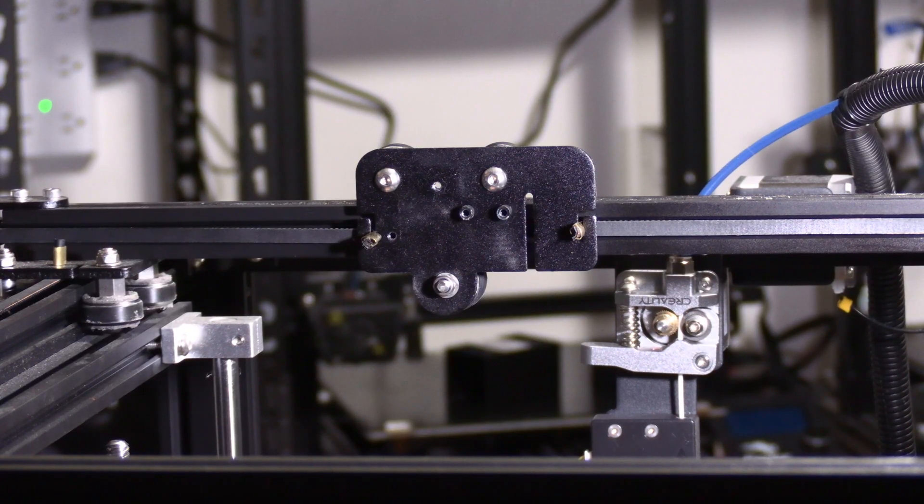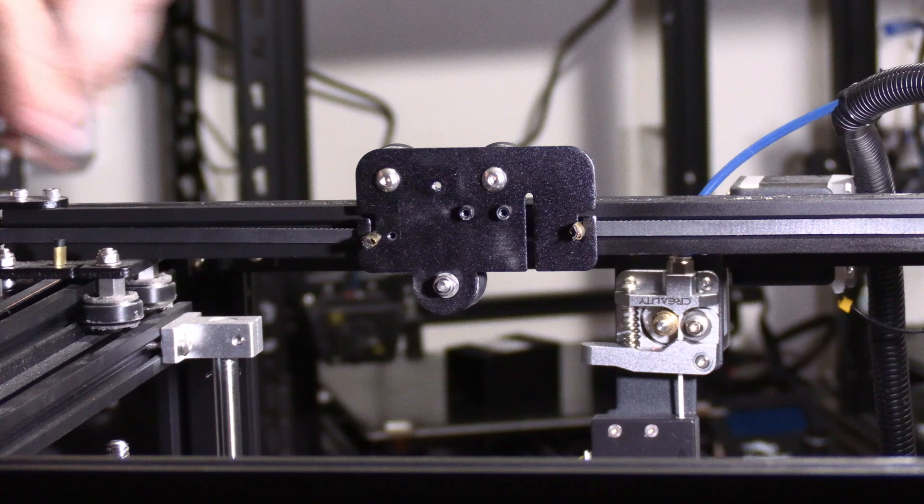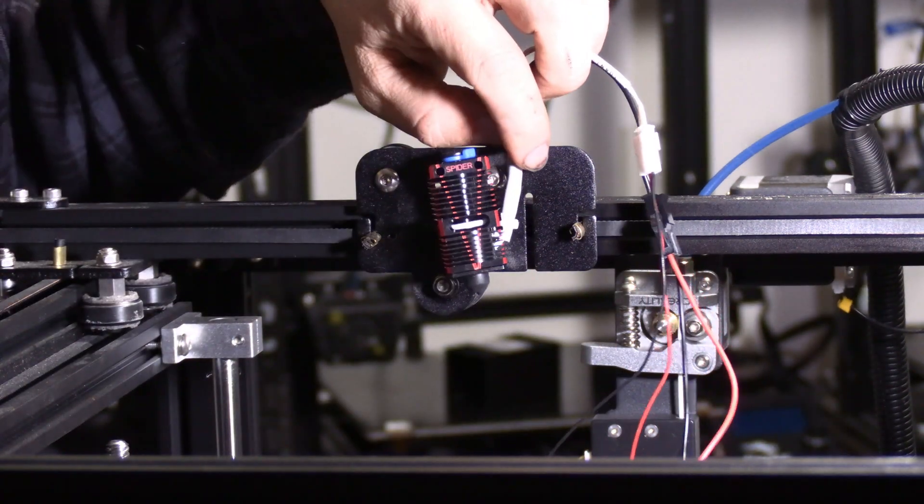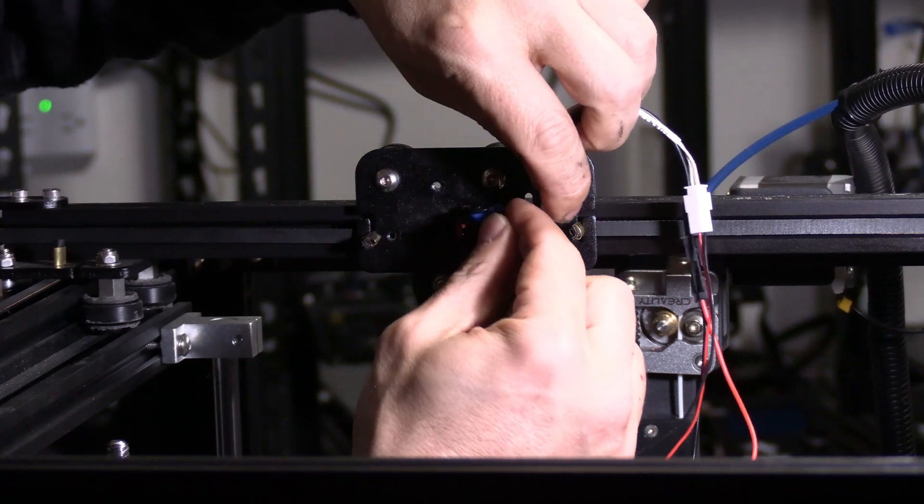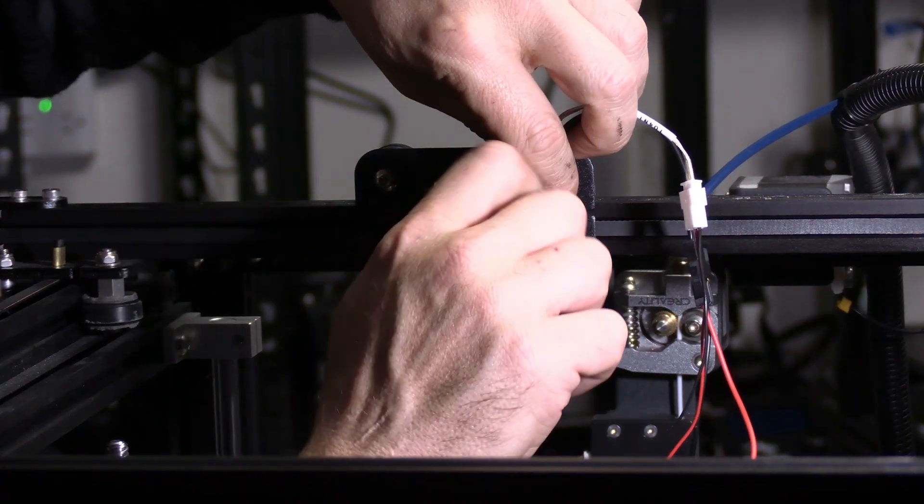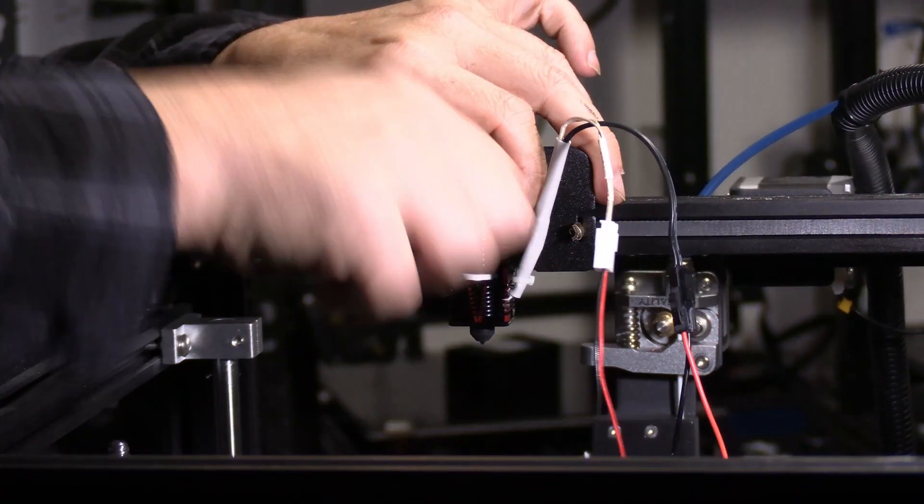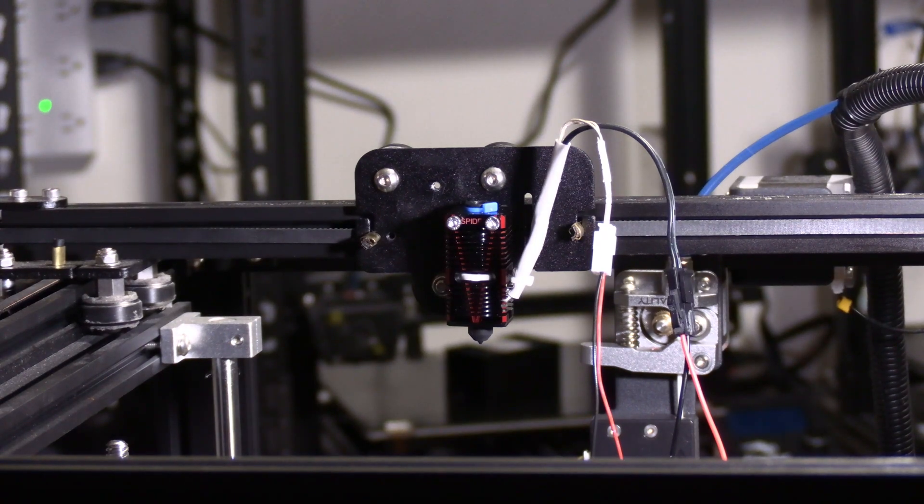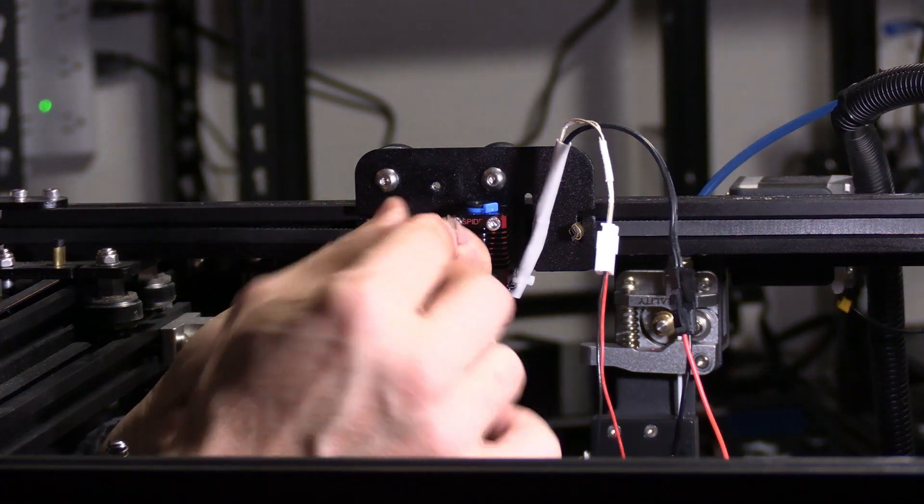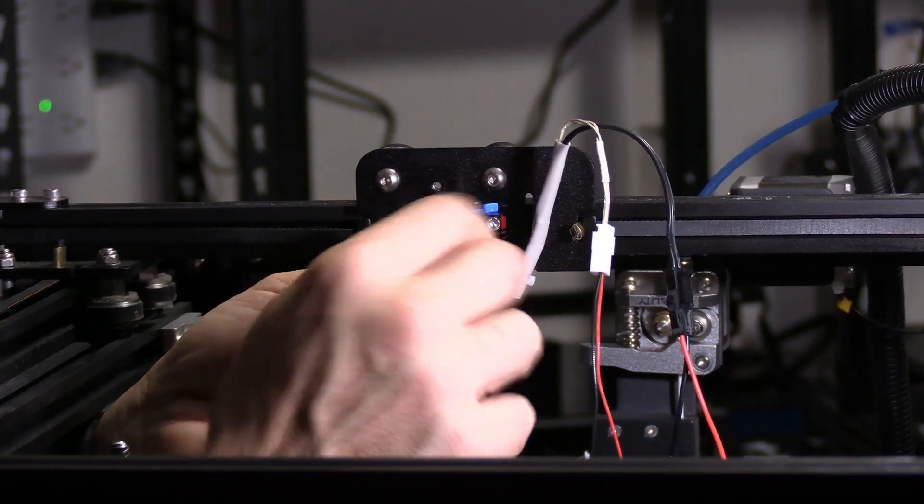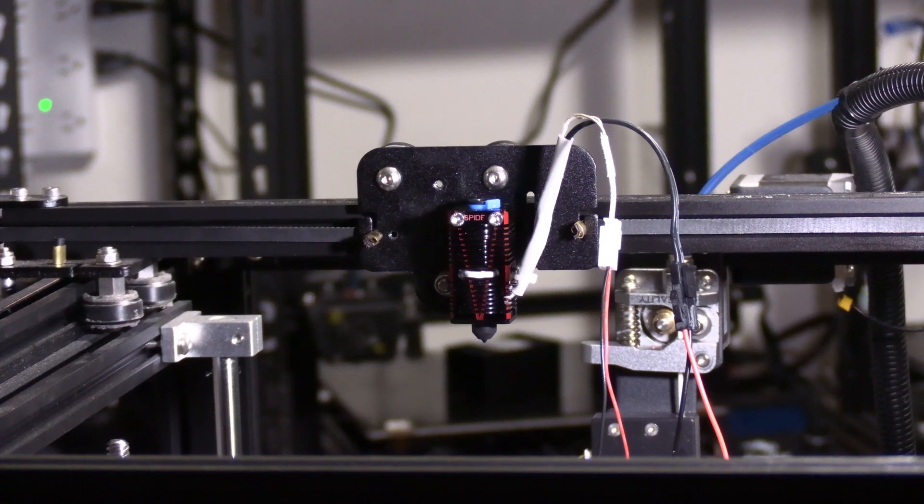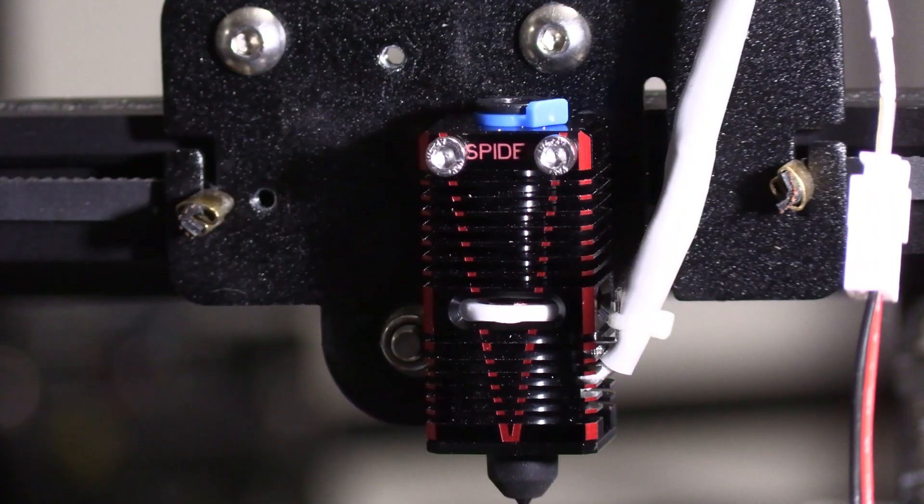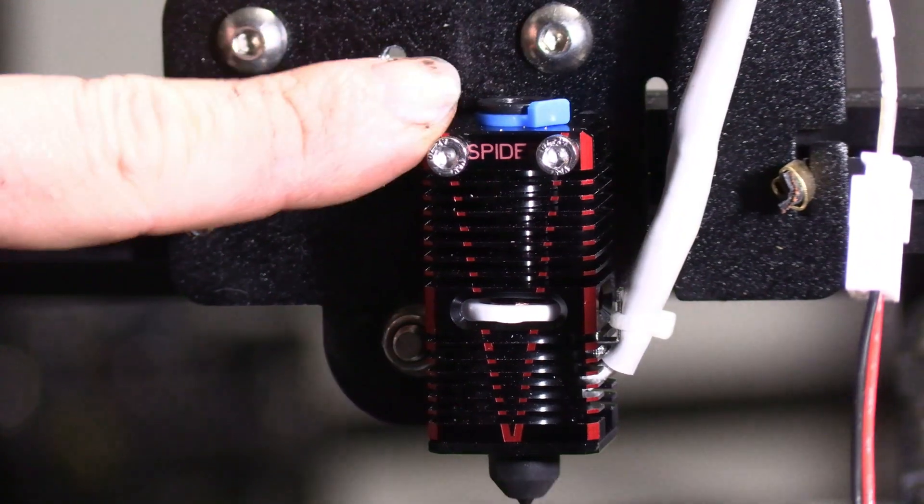In the kit the Spyder Hot End came with you will find two screws. Use those screws to install it to the back plate. They even kindly included a little allen key. How nice of them. In case I was rudely blocking your view those are the two screws that we just installed.